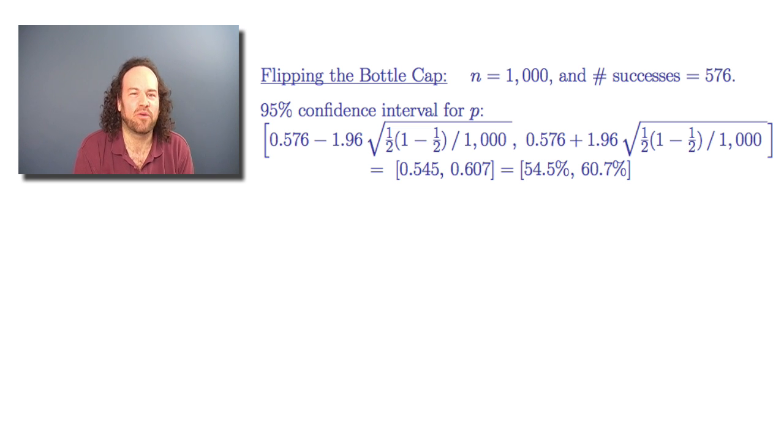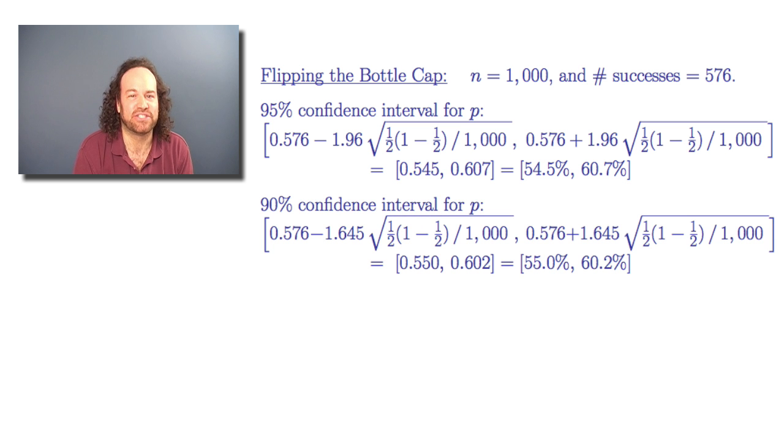If we didn't want to be quite so certain but just 90% certain, then we could take the interval where instead of 1.96 we'd use 1.645 and we'd get an interval that way, which would be a little bit narrower, because we're pretty sure, although not quite as sure, that it's in this narrower range.